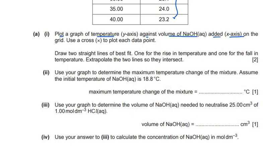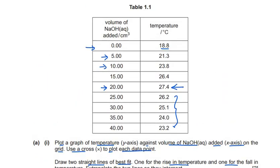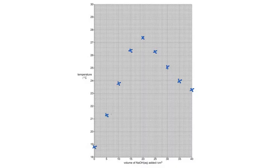On the grid, use a cross to plot each data point and draw two straight lines of best fit — one for the rising temperature and one for the fall in temperature — then extrapolate the two lines so that they intersect. I'll minimize the graph and plot all the points with temperature on the y-axis and volume of NaOH on the x-axis. We then draw two straight lines intersecting at a point.